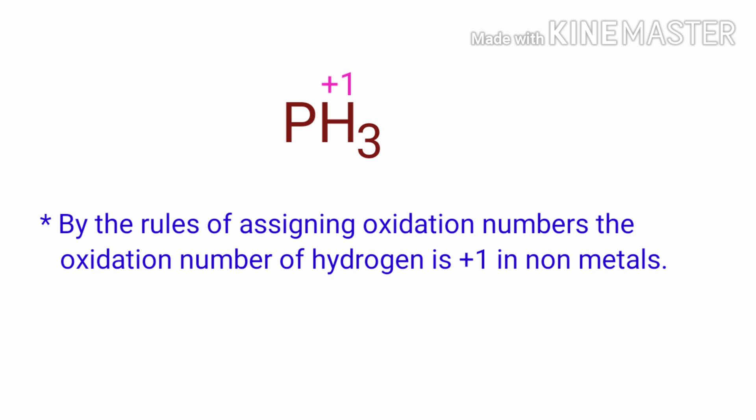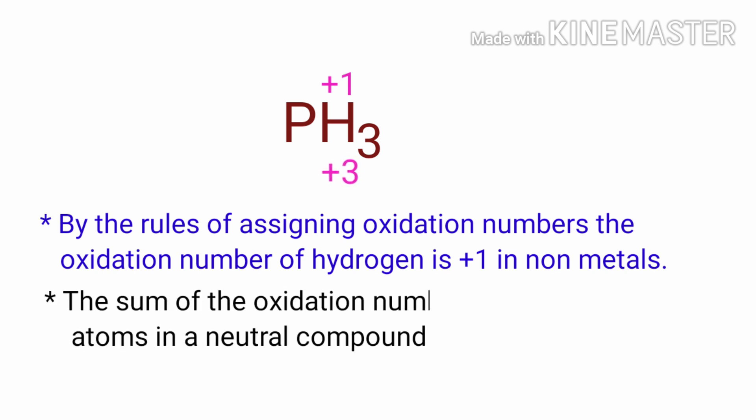We can write the oxidation number of the element above its symbol and the total oxidation number of the atoms below its symbol. As per rule in a neutral compound, the numbers along the bottom must add up to 0.